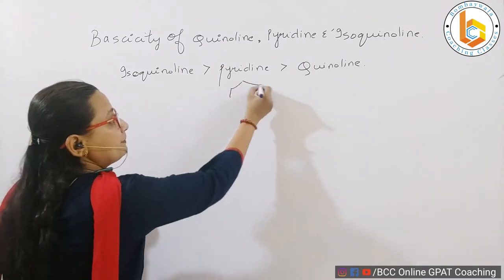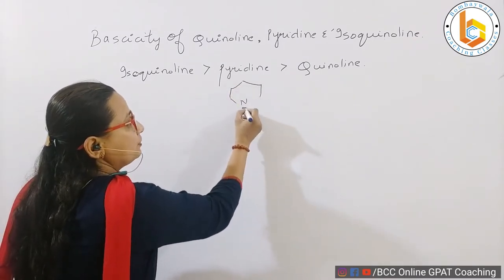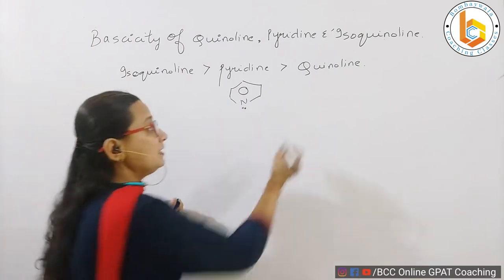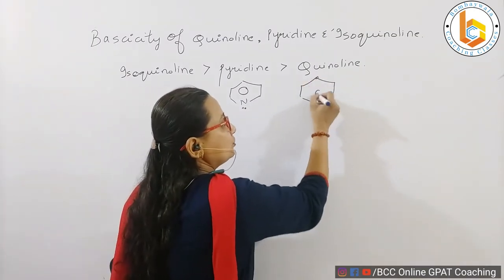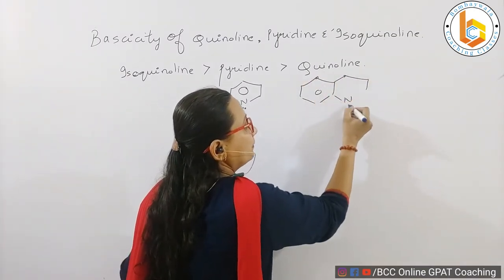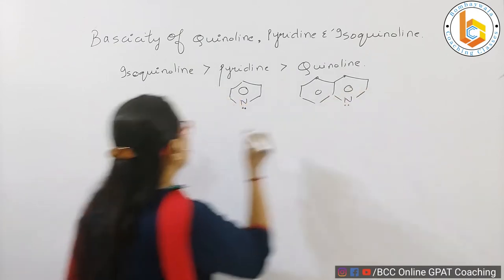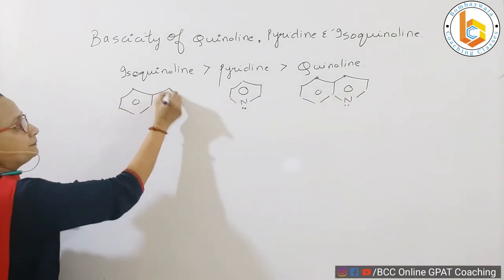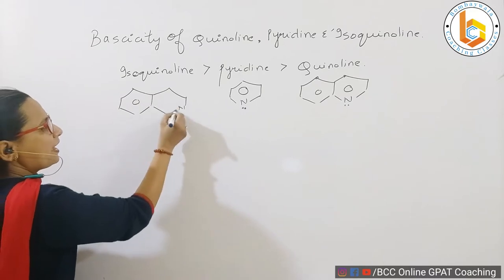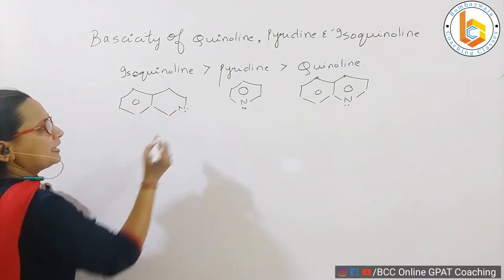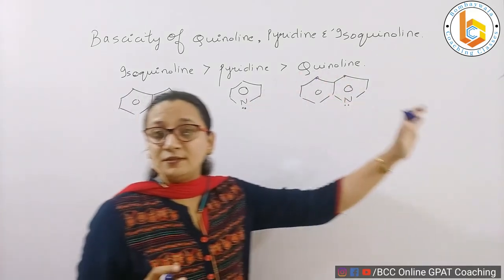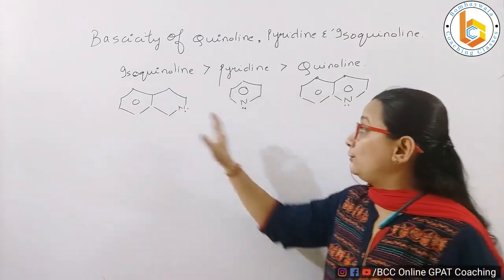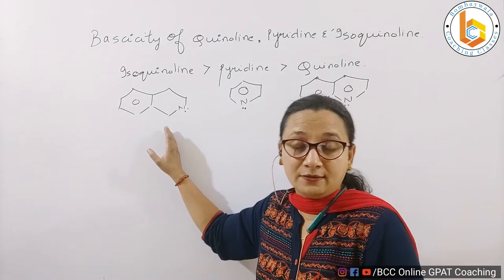We said that they share a pyridine structure. Benz-fused pyridine is quinoline, and nitrogen is at position number two in isoquinoline. So why is the basicity in this order? Why is isoquinoline more basic than pyridine, which is more basic than quinoline?